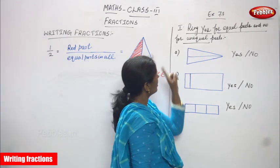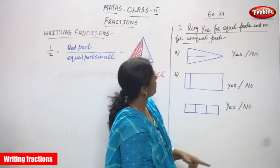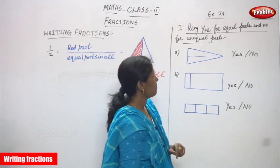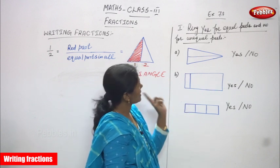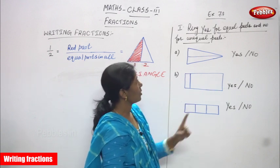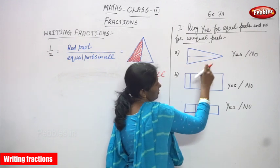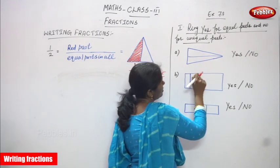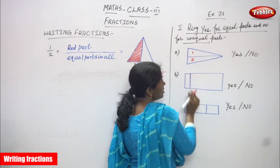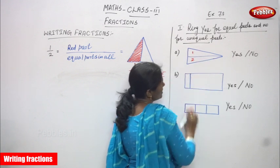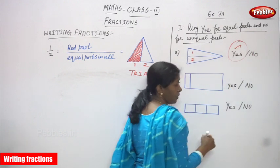Next exercise: Ring S for equal parts and No for unequal parts. This is a triangle. I cut it into equal parts — this is the first part, this is the second part. Whether it is equal or not? Yes, of course it is equal. So, I circle it.